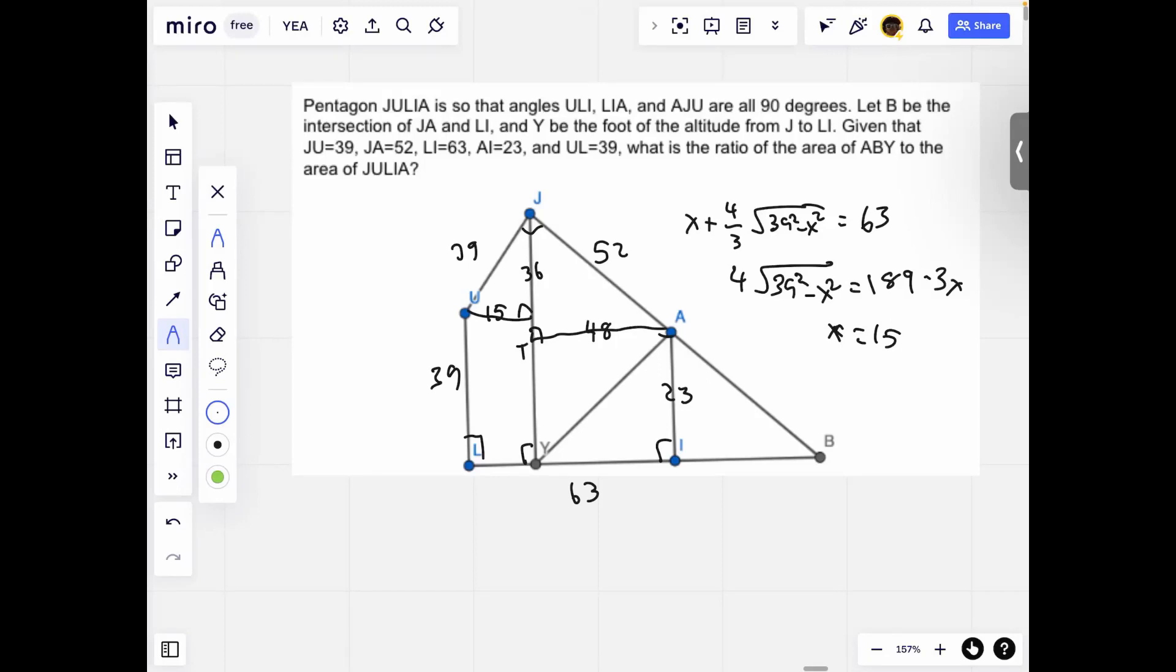I can erase this part. So then JT by the Pythagorean theorem equals 20. So then that means the ratio of the legs is 12 to 5. So therefore, IB is 12 over 5 times 23.